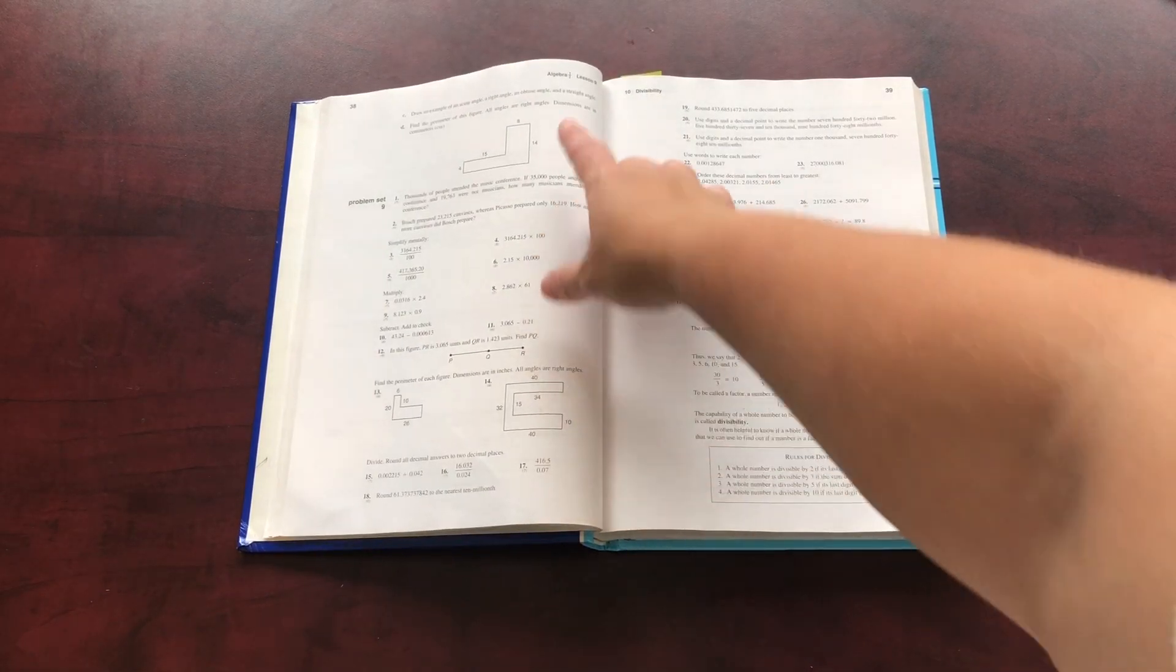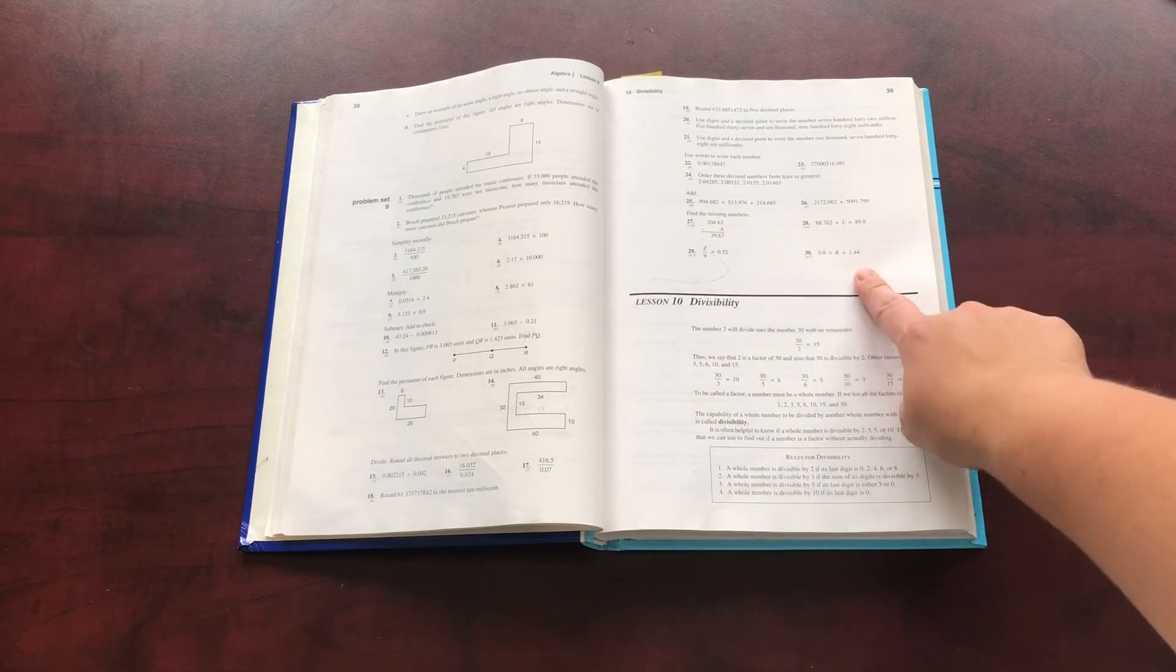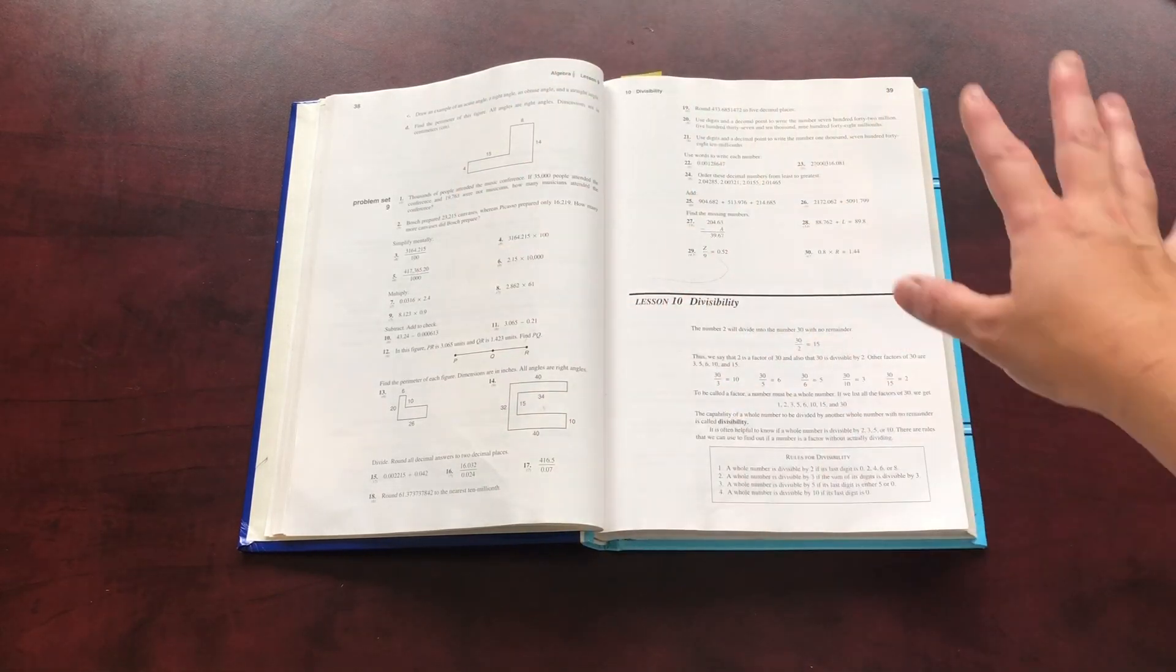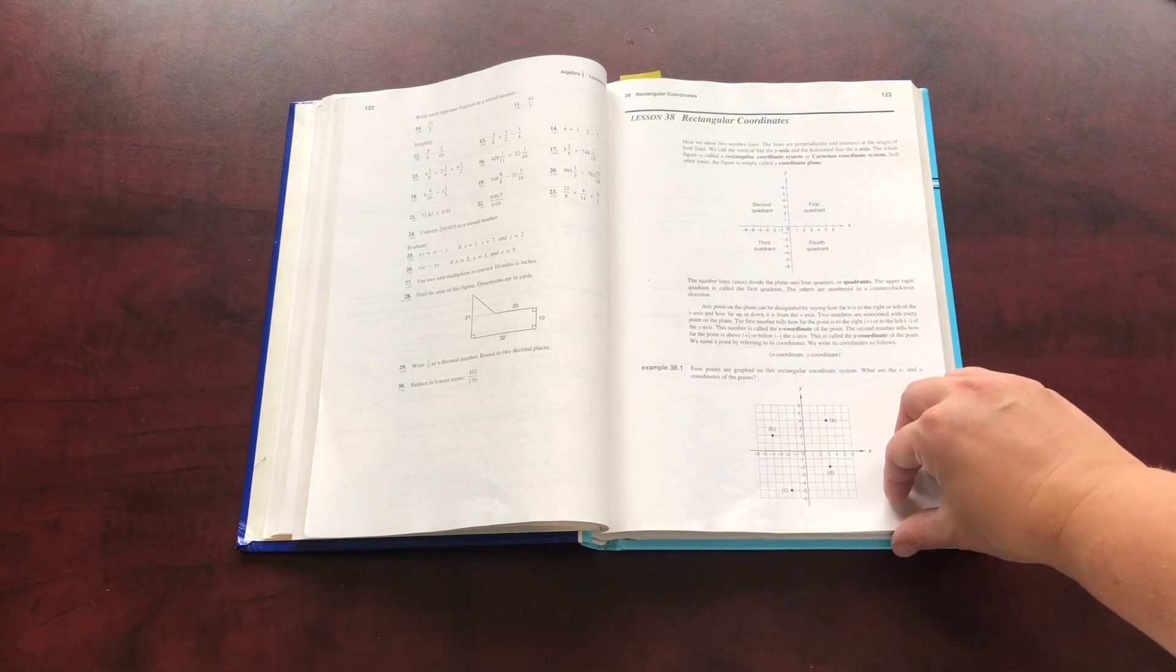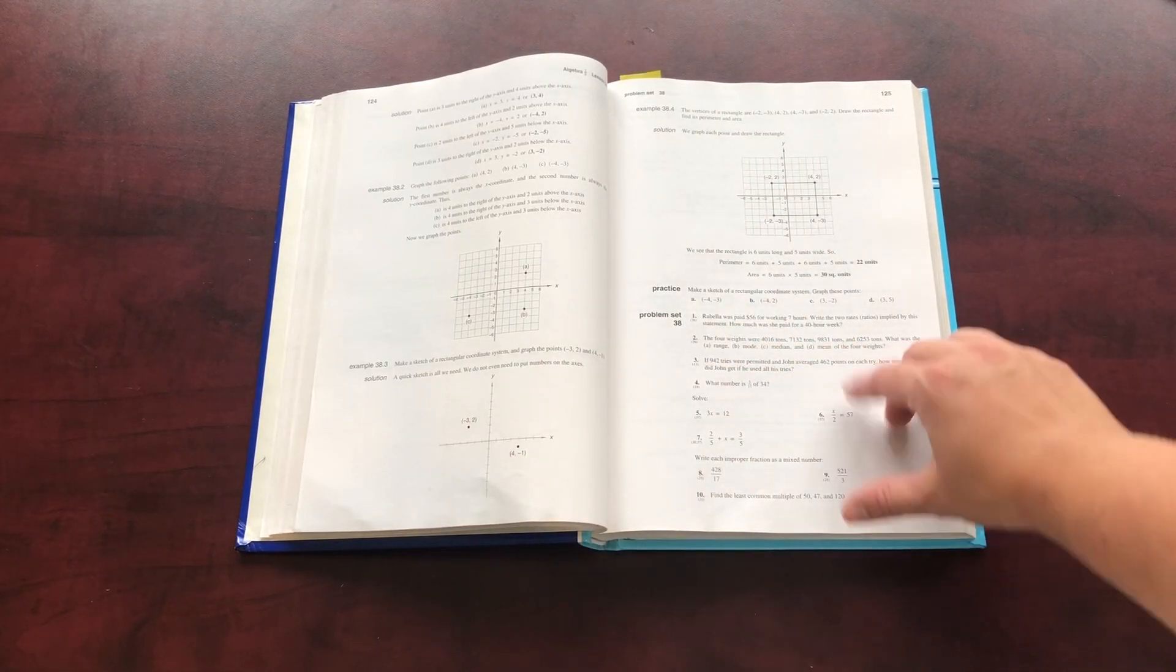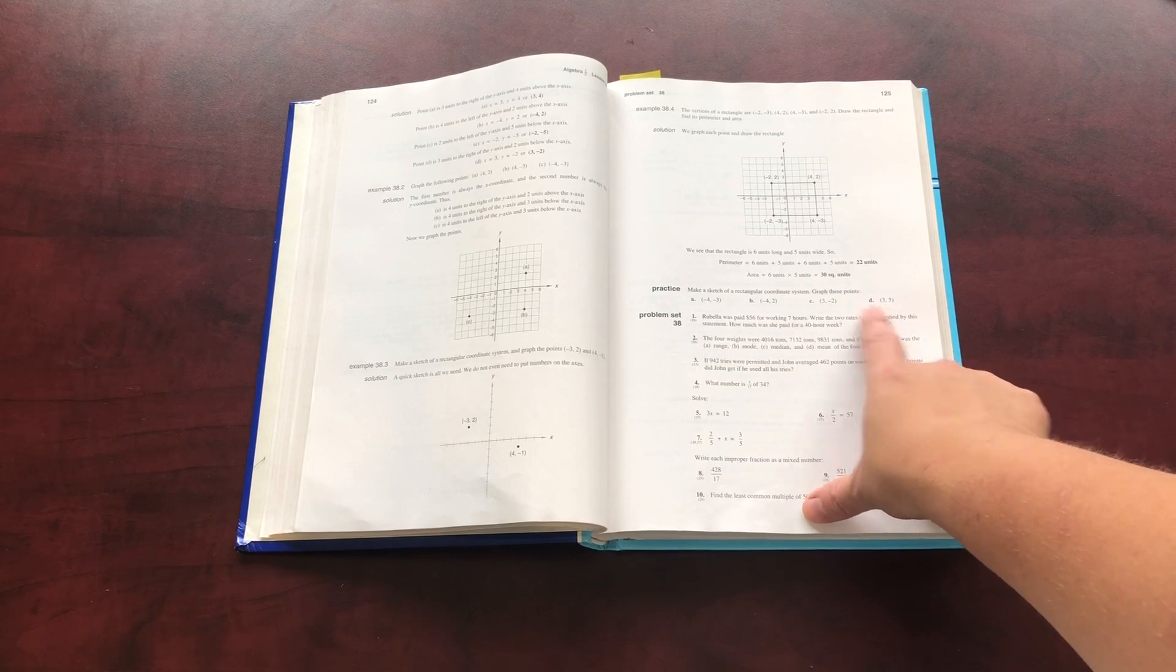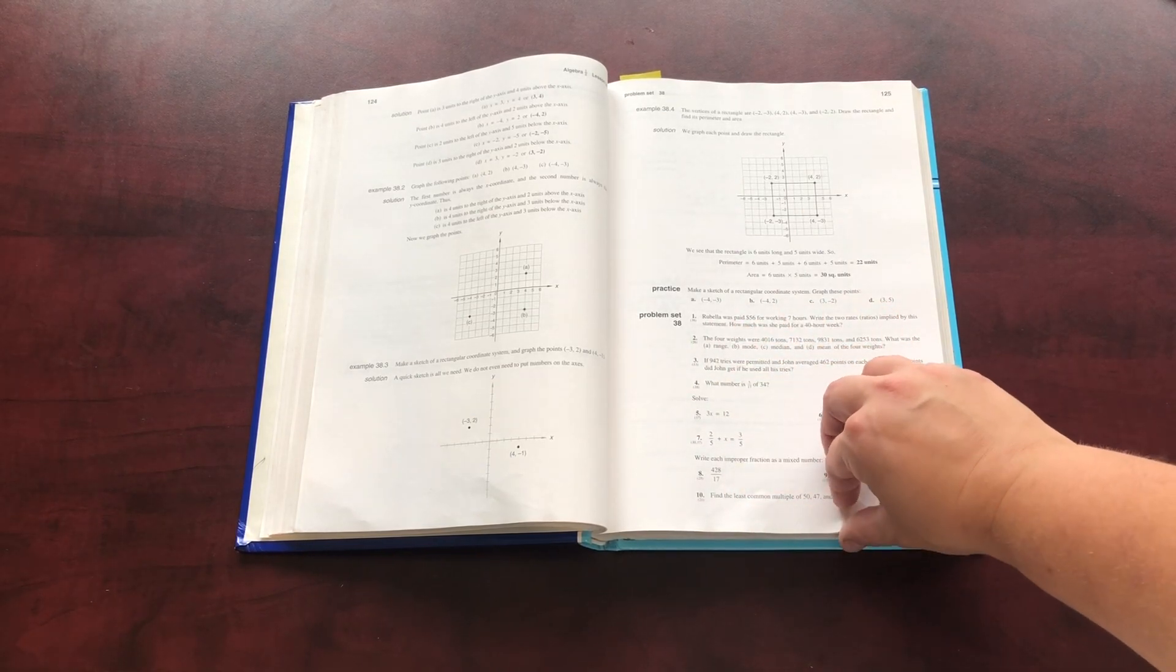And then there is the problem set, which is 30 questions. And this is a review of everything you have previously learned. So each one is set up the same. You can see here the information, the examples. There's the practice for that day. And here are the problem sets.